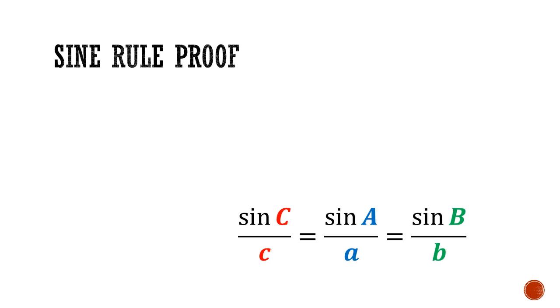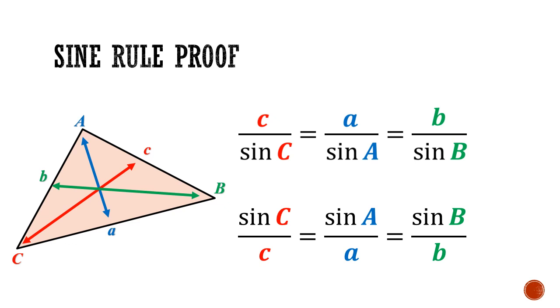Alternatively, we can invert these three fractions. We get another version of the sine rule that states that C over sine C equals A over sine A equals B over sine B. This tells us that for any given triangle, the ratio of a side against the sine of its opposite angle is always a constant.